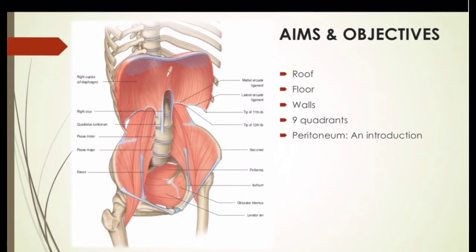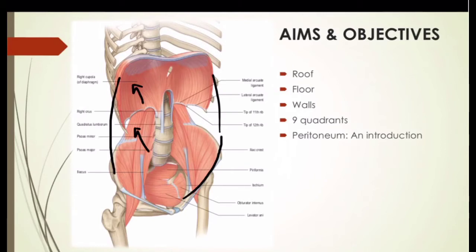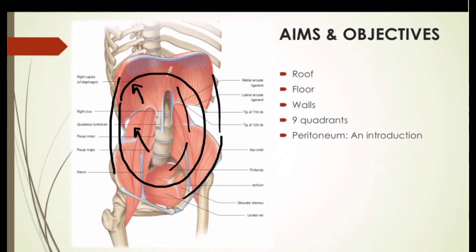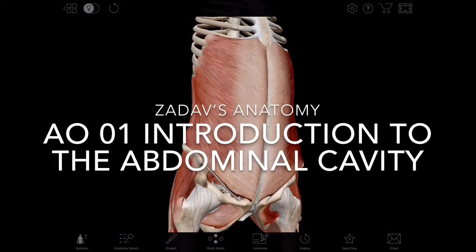I want you to imagine that the abdomen is like an oval balloon. This is its posterior wall — you can see the diaphragm and a couple of muscles here contributing to it. We'll also study the lateral walls on either side and then the anterior wall. Ultimately, I want you to understand that the peritoneum is literally like a balloon lying inside this balloon — this is going to be the peritoneal balloon. So let's see how that works out as we go to the 3D lab introduction to the abdominal cavity.